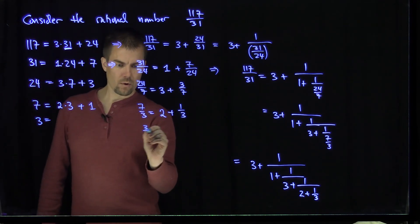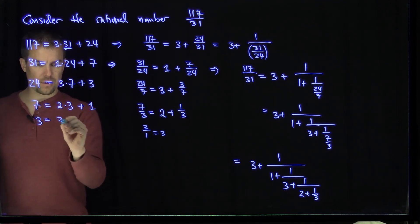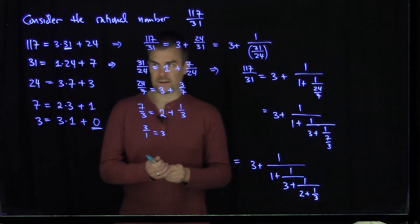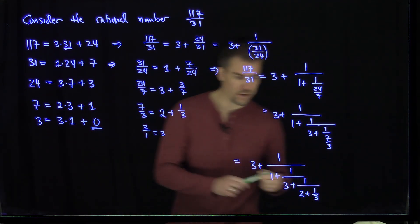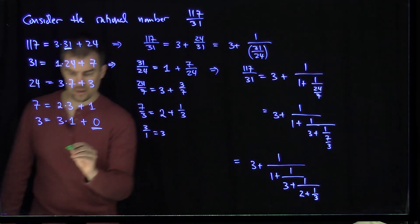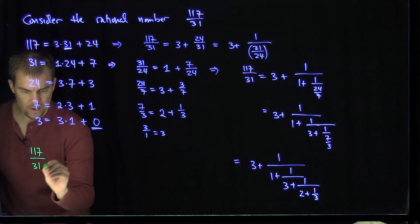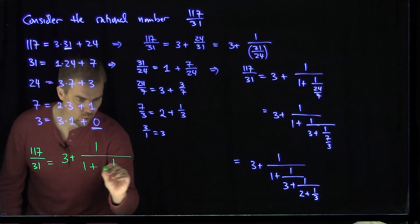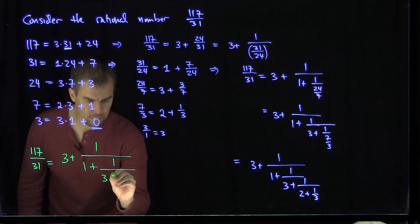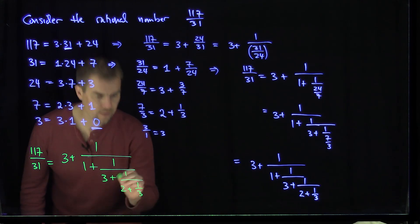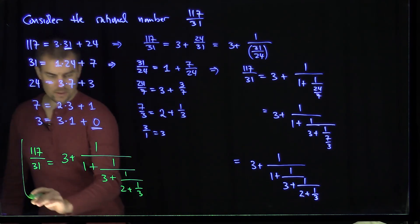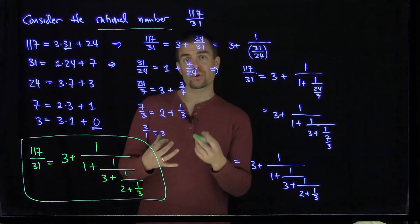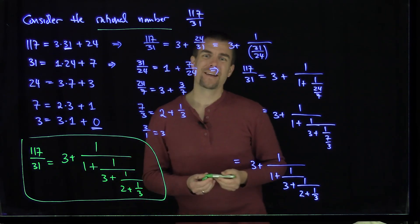3 over 1 is just going to be 3 times 1 plus a remainder of 0. And when we get a 0, the process stops. So 117 over 31 is equal to 3 plus 1 over 1 plus 1 over 3 plus 1 over 2 plus 1 over 3. Our continued fraction is complete. This process will work for any rational number — any rational number can be written as a finite continued fraction. Thank you very much.